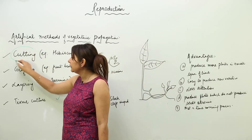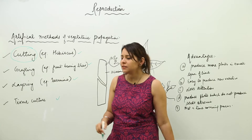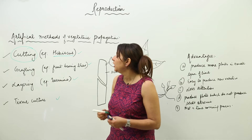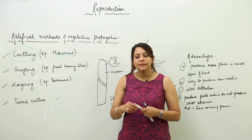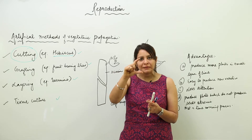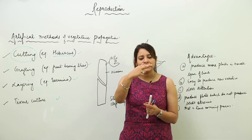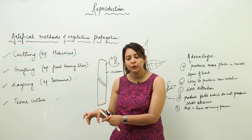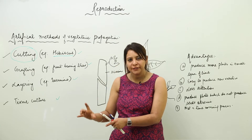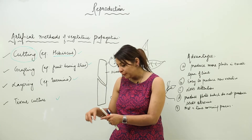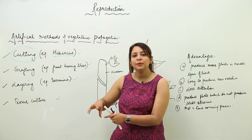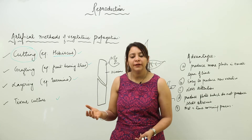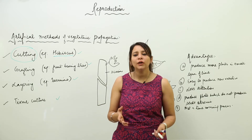First, we are going to discuss cutting. It happens in many plants — for example, the hibiscus. What we do in cutting is we take a plant and cut its stem. We bury that stem in the soil. Under favorable conditions, that small part of stem is capable of developing roots as well as the above-ground plant, giving rise to a fully grown plant in a short span of time.